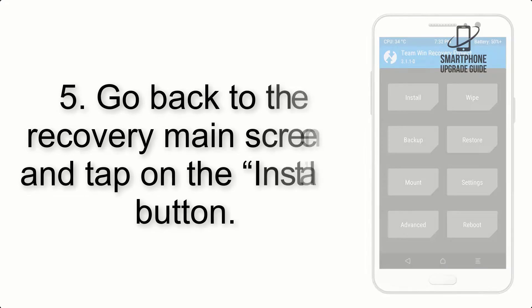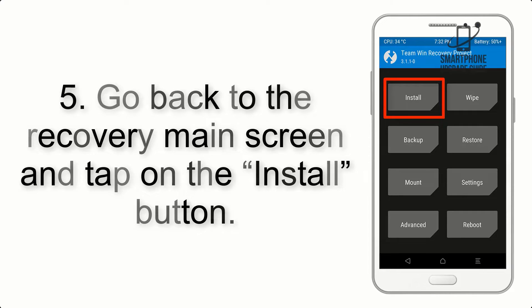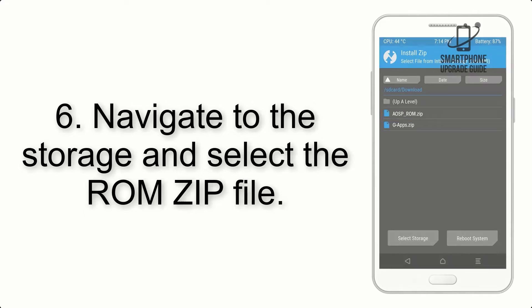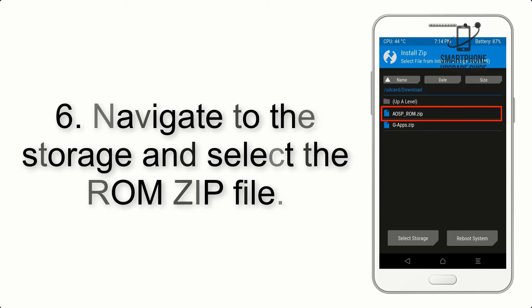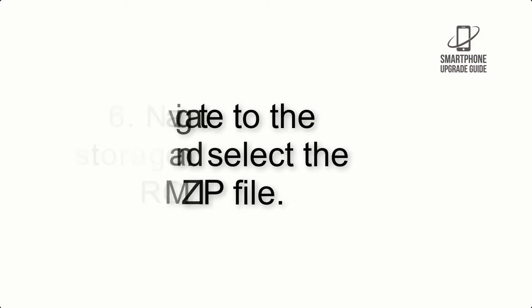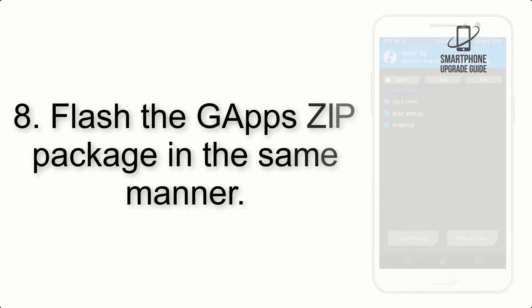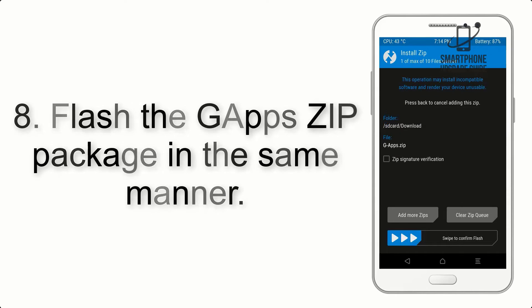Step 4: Swipe the button to wipe the device. Step 5: Go back to the recovery main screen and tap on the Install button. Step 6: Navigate to the storage and select the ROM zip file. Step 7: Finally, swipe the button on the screen to install the ROM file.